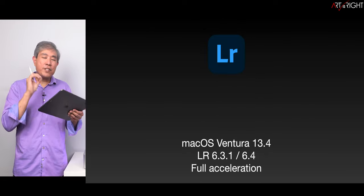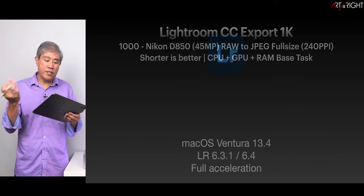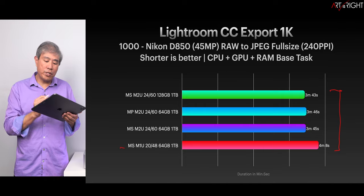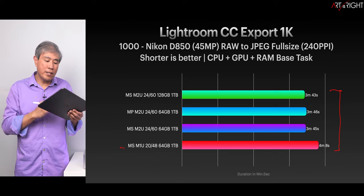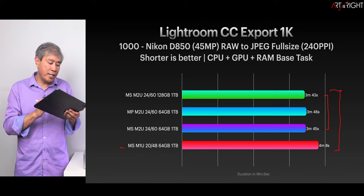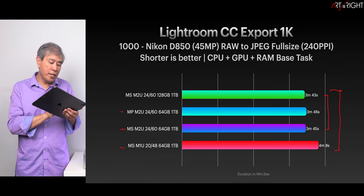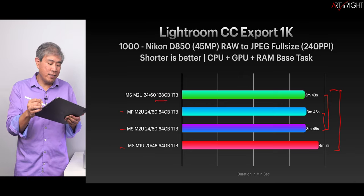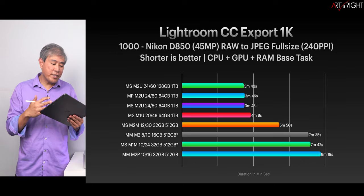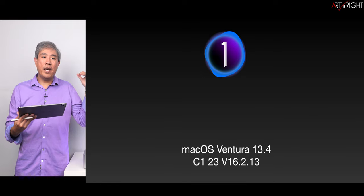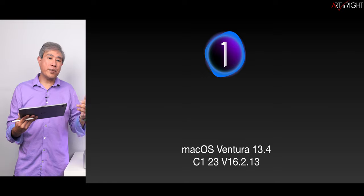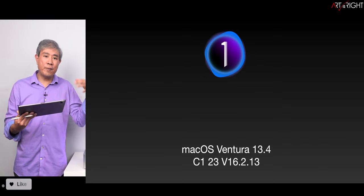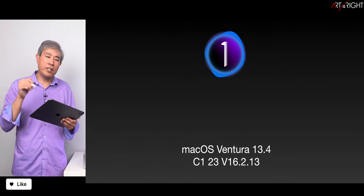Now let's take a look at Lightroom desktop, version 6.3.1 and 6.4 — performance between these two versions is super identical. The time spread is as we would expect. The M1 Ultra is slightly slower by about 20–25 seconds, but the spread between all machines is very similar. Interestingly the M2 Ultra Studio is one second faster than the Mac Pro. The 128 gigabyte configuration is faster by around three seconds — not a big deal at all. There are also some weird results happening with the M1 Ultra on Lightroom, where the current OS and Lightroom version exports slower — I'll leave a link to that video in the description.